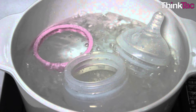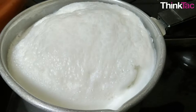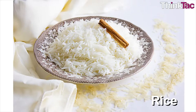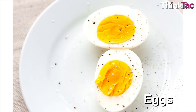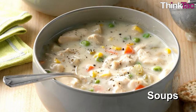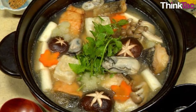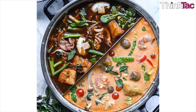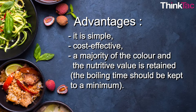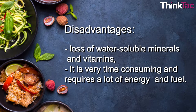Feeding bottles of infants are boiled to kill the microbes present in them. Food suitable for boiling include milk, starchy foods like rice, noodles and potatoes, eggs, meat, stocks and soups. As a cooking method, it is very simple and suitable for large-scale cookery. It has several advantages: it is simple, cost effective, and a majority of the colour and nutritive value is retained. The boiling time should be kept to a minimum. The disadvantages include loss of water-soluble minerals and vitamins, and it is very time-consuming and requires a lot of energy and fuel.